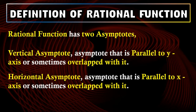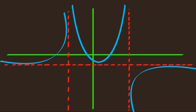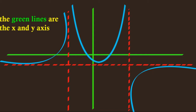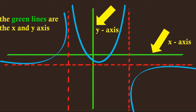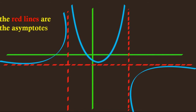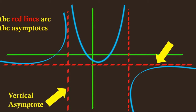For you to visualize what asymptotes are, take a look on the graph of this rational function. The green lines here are the axes. The y-axis is the line drawn vertically or standing, while the x-axis is the line drawn horizontally or lying down. The red lines on the other hand are the asymptotes. This one here is the vertical asymptote — you can see it is parallel to the y-axis, just like the y-axis, standing. This one is the horizontal asymptote — you can see it is parallel to the x-axis, just like the x-axis, lying down.